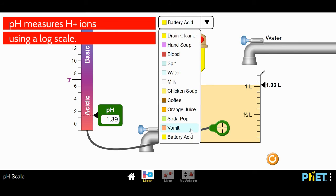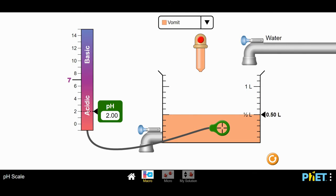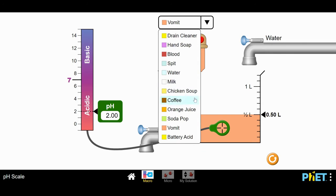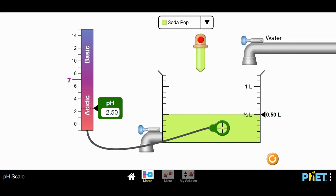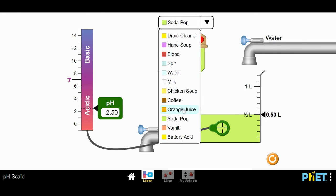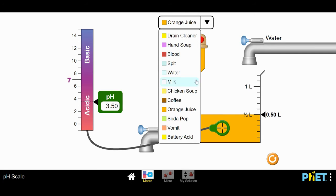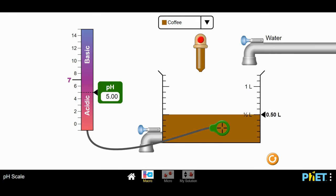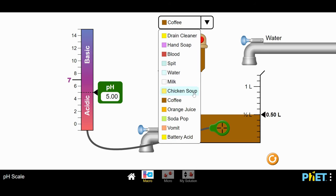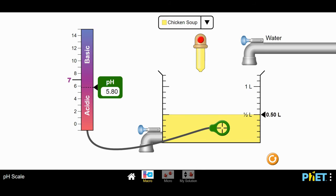Let's test some other liquids. Vomit has a pH of 2.0. Soda pop has a pH of 2.5. Orange juice has a pH of 3.5. Coffee has a pH of 5. These are all examples of solutions that are acidic. Chicken soup has a pH of 5.8. This is an acidic solution.